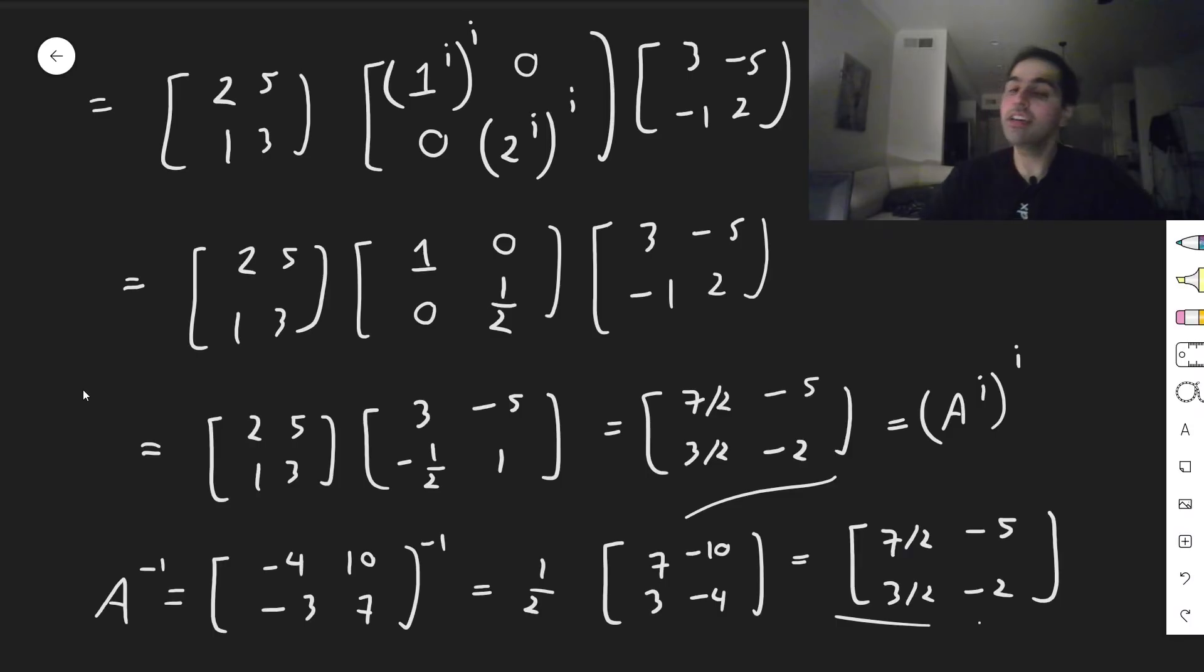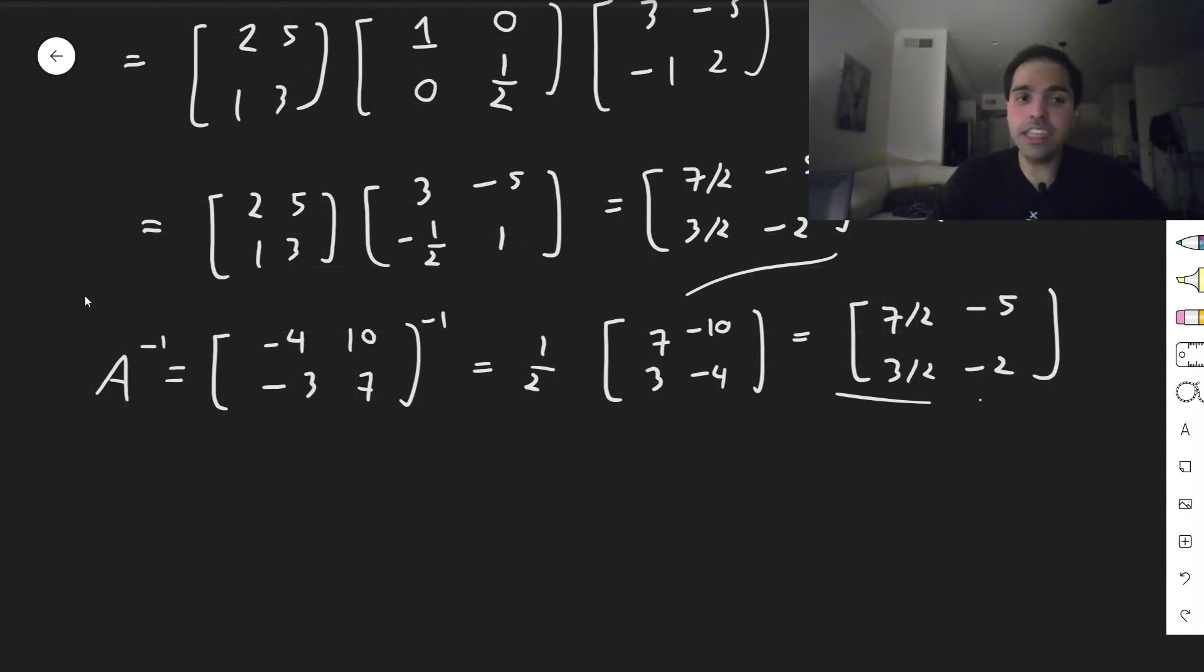And look, it's the same answer as here. So indeed, what is this A to the i? It satisfies that the i-th power to the i-th power is the negative first power. So just the inverse of A. How cool is that?